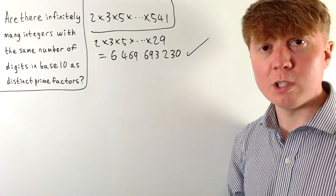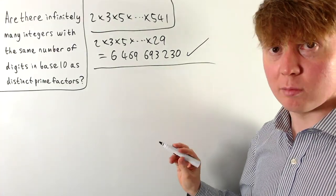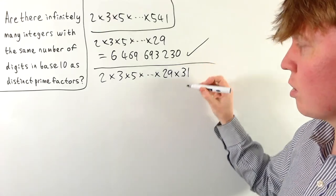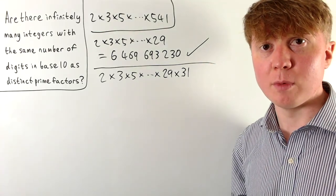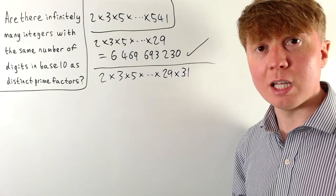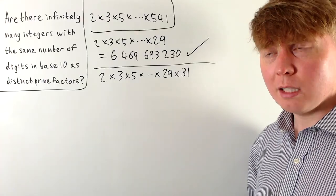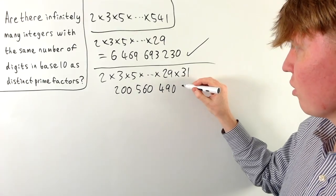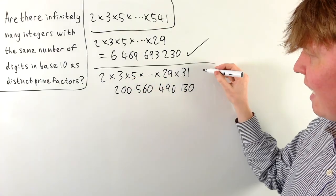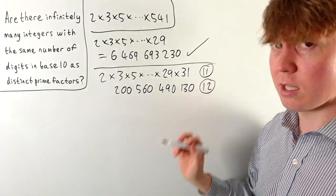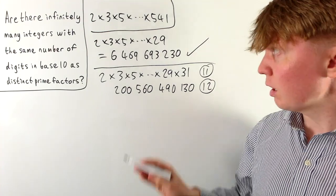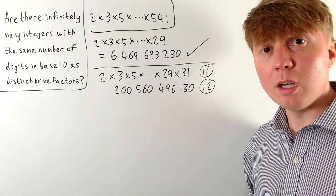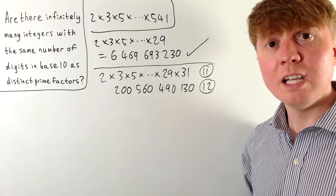Let's try making an eleven-digit example. If we take the product of the first eleven primes — 2 times 3 times 5 all the way up to 29 then times 31 — this is the smallest number we could possibly make with eleven distinct prime factors. When we calculate this, we get 200,560,490,130, which has eleven prime factors but twelve digits. So we've hit a problem: we can make a ten-digit example, but with eleven prime factors the number is already too big to have only eleven digits.